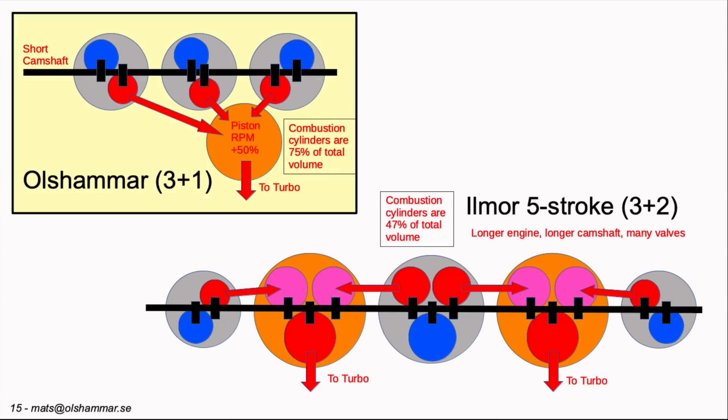The design of the old summer three plus one engine. We expect with this design that the combustion cylinders will be 75% of the total volume. If we compare it to the Ilmor five stroke, there is a design with three combustion cylinders but you would need two exhaust cylinders as well. And you get a very long engine and you still have 47% of the total volume for the combustion cylinders only.